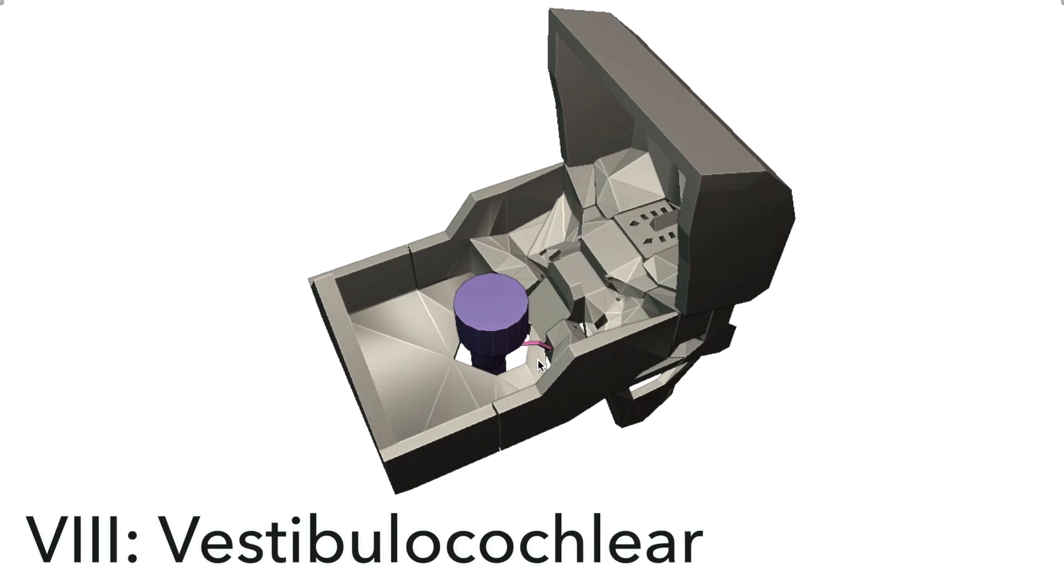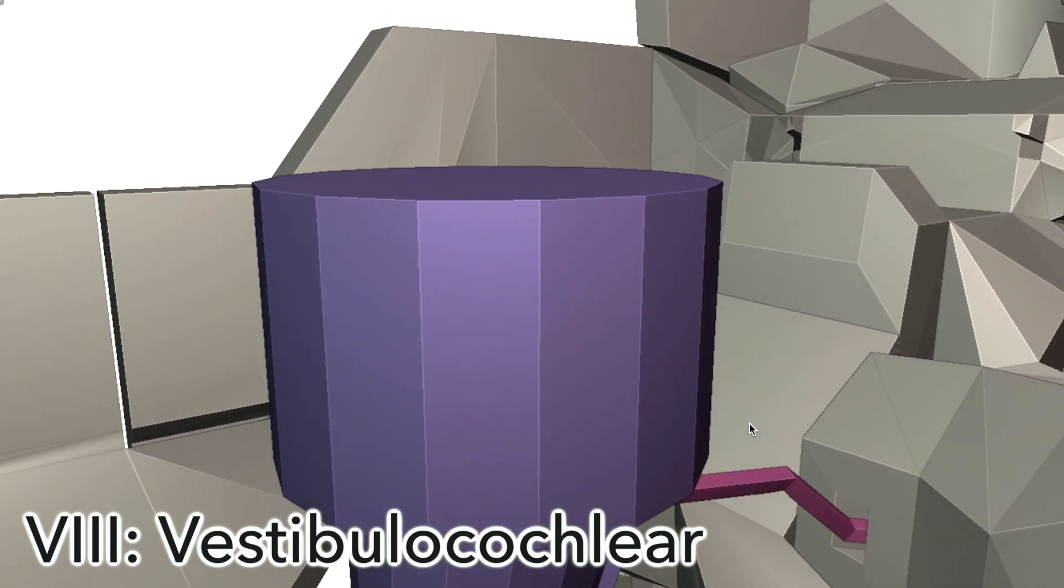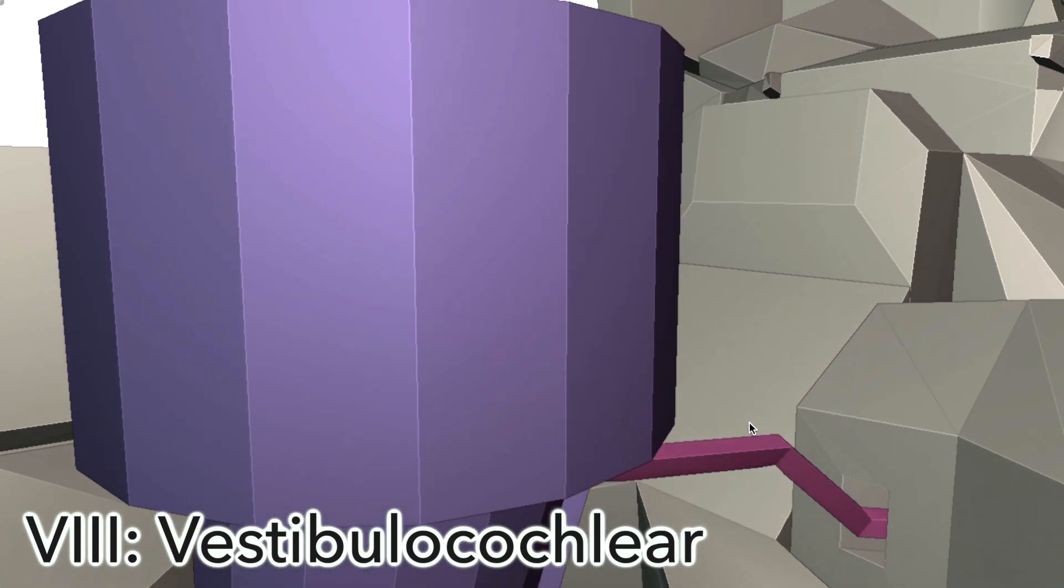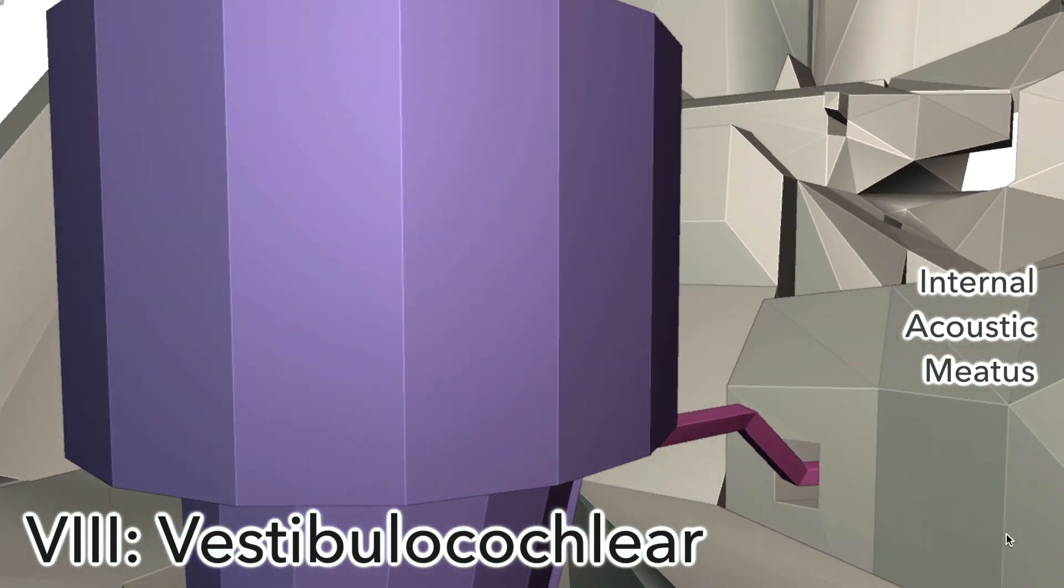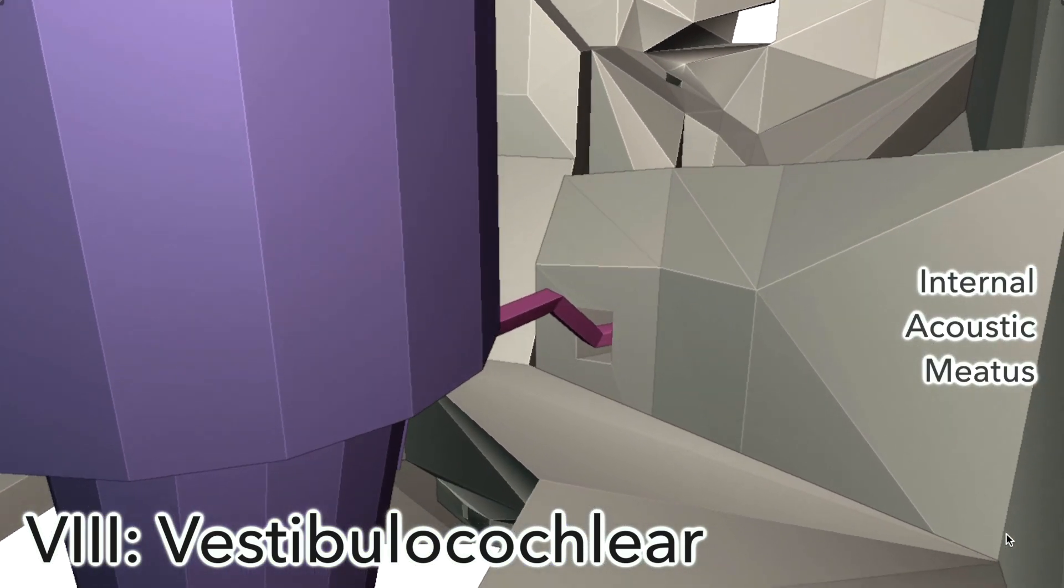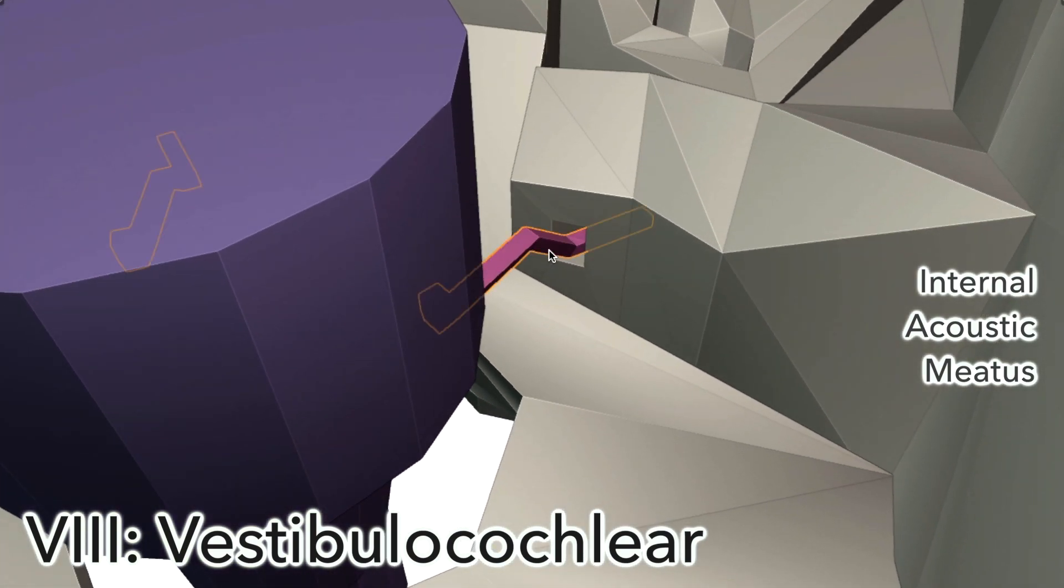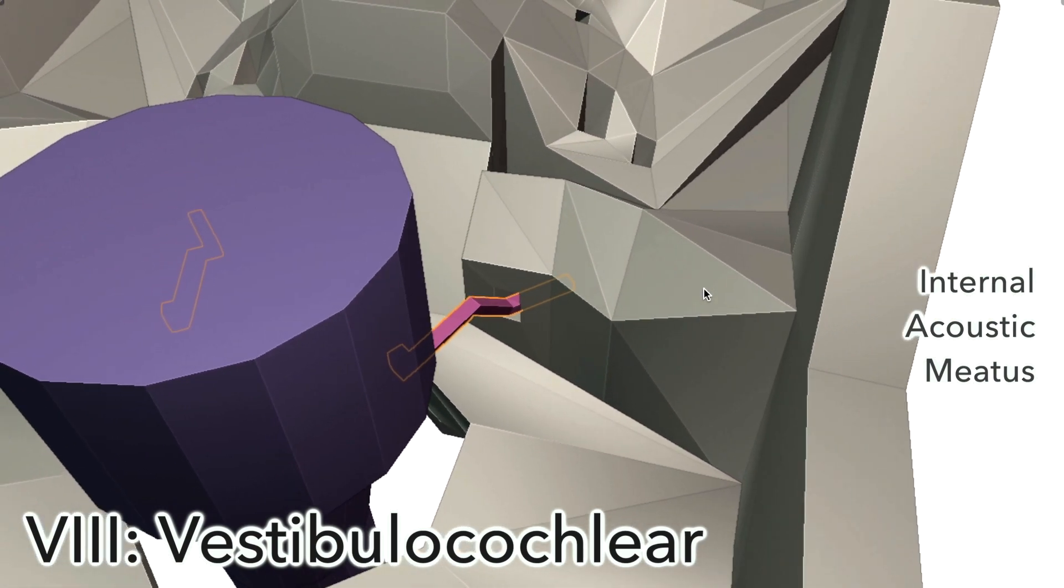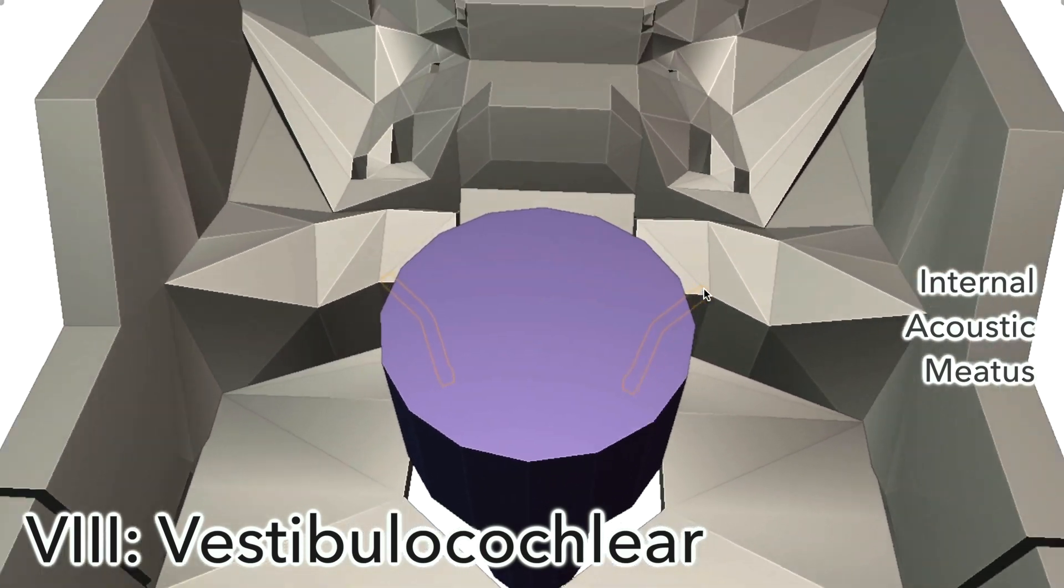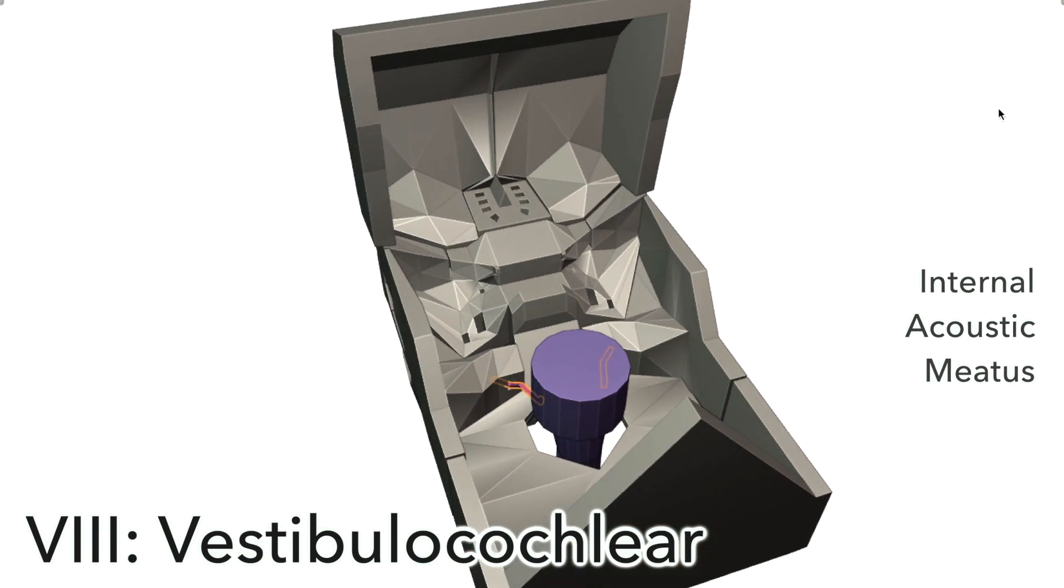Number eight is the vestibulocochlear nerve, which arises just lateral to the facial nerve, also in the cerebellopontine angle. It also hits the internal acoustic meatus, and then splits into two different portions, the cochlear portion anteriorly and the vestibular portion posteriorly. It ends up heading toward the middle ear, providing us with our senses of hearing, that's the cochlear branch, and equilibration or balance, which is the vestibular branch.